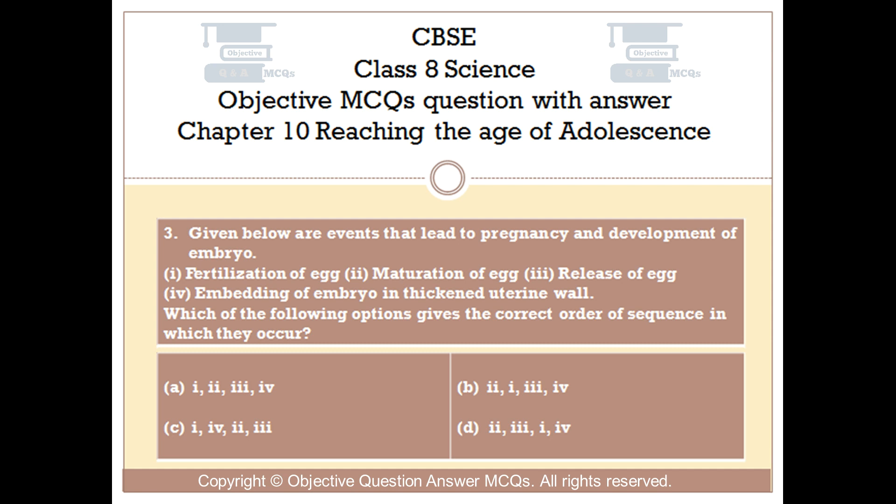Question number 3. Given below are events that lead to pregnancy and development of embryo: Number 1 fertilization of egg, Number 2 maturation of egg, Number 3 release of egg, Number 4 embedding of embryo in thickened uterine wall. Which of the following options gives the correct order of sequence in which they occur?